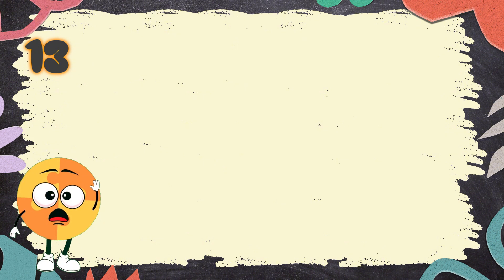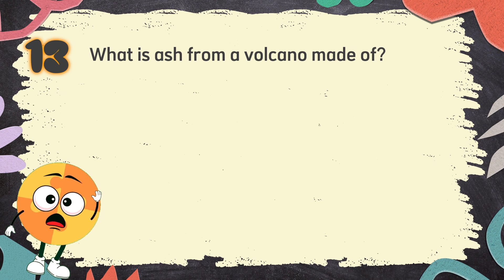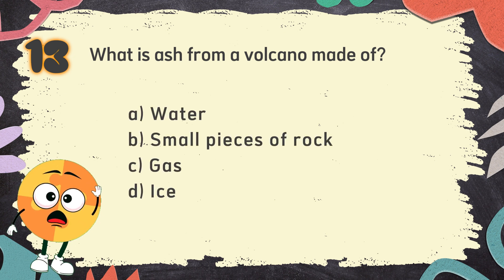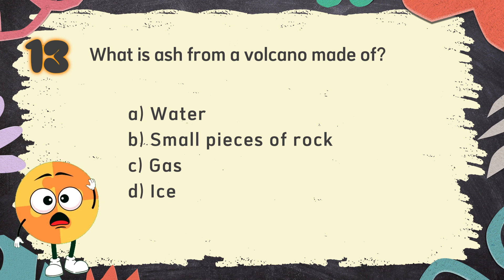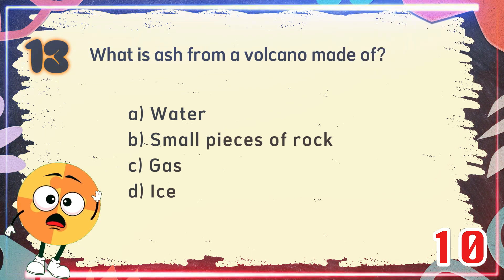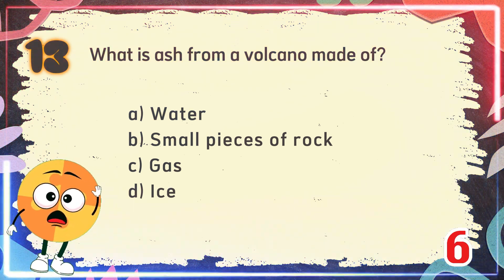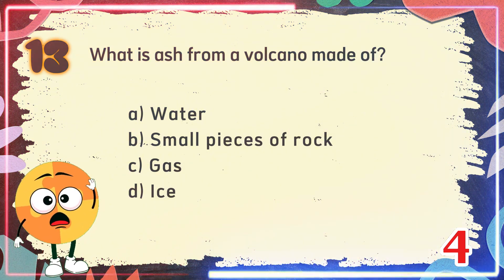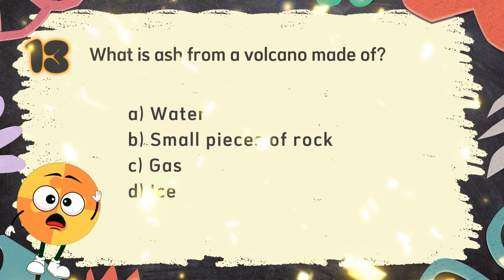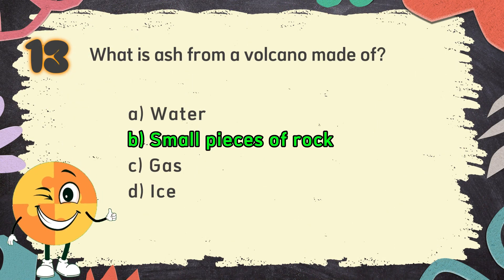Number 13. What is ash from a volcano made of? The choices are: A. Water, B. Small pieces of rock, C. Gas, D. Ice. The correct answer is B. Small pieces of rock.